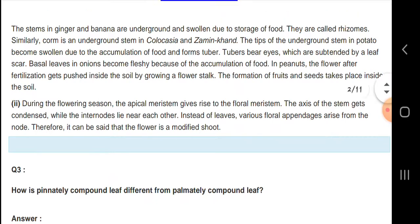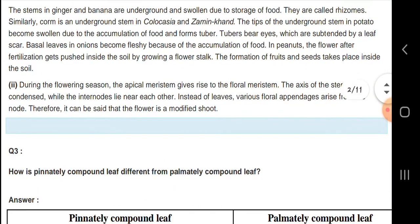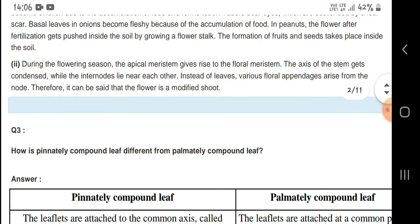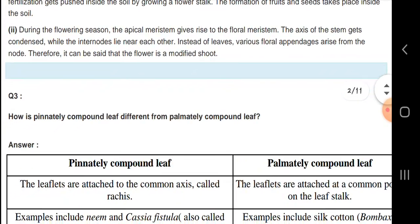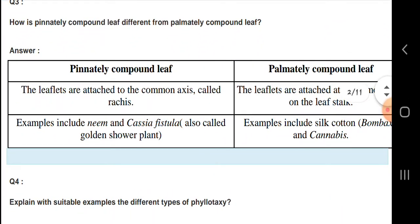During the flowering season, the apical meristem gives rise to the floral stem and the axis of the stem gets condensed. While the internodes lie near each other, various floral parts arise from the node.